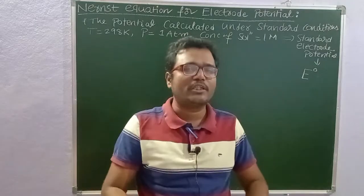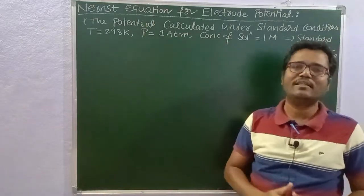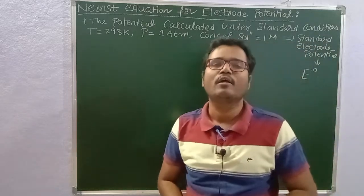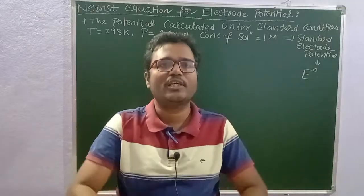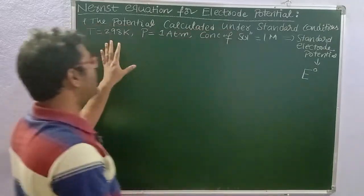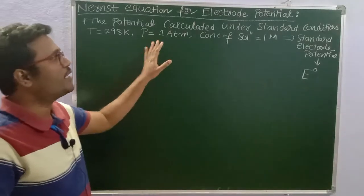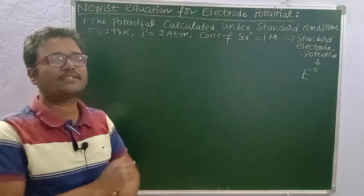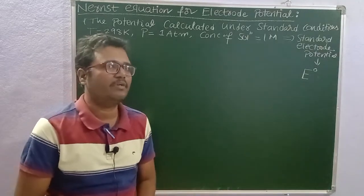That equation is called the Nernst equation. The Nernst equation is the expression used to calculate electrode potential under non-standard conditions where temperature is not 298 Kelvin, pressure is not 1 atmosphere, and concentration of solution is not 1 mole. That is the simplest, easiest definition of the Nernst equation.